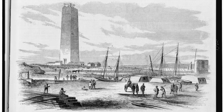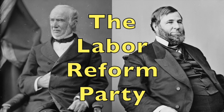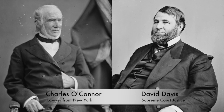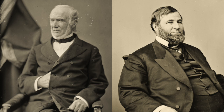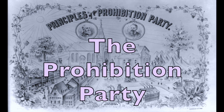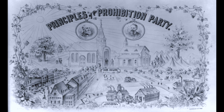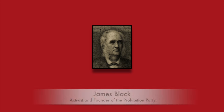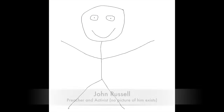How about some third parties? Well, there were at least three new ones. The Labor Reform Party tried to nominate a couple fellows — lawyer Charles O'Connor from New York and Supreme Court Justice David Davis from Illinois — but things just didn't work out; it was kind of doomed from the start. Meanwhile, there was the Prohibition Party, which was formed to oppose the consumption and sale of alcohol. James Black, who founded the party and was a big temperance activist, was their first nominee for president. John Russell, another founder of the party, was his running mate.